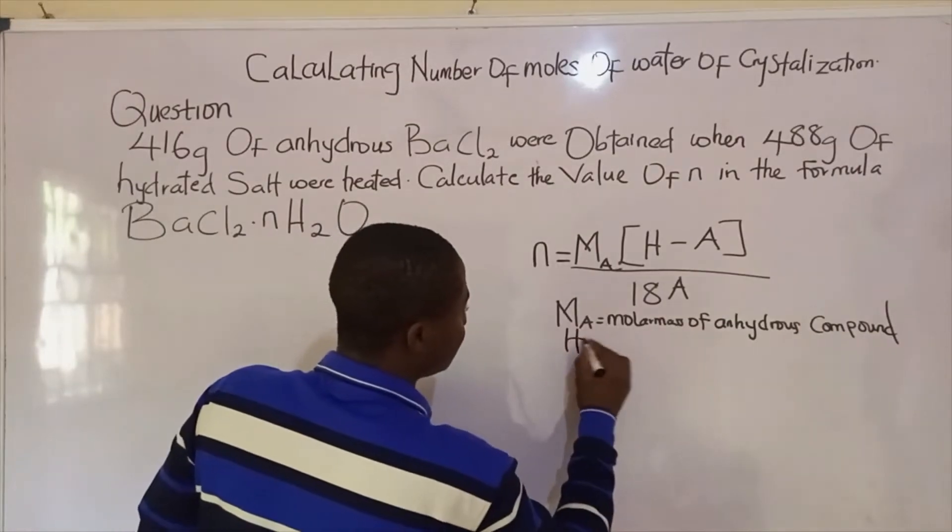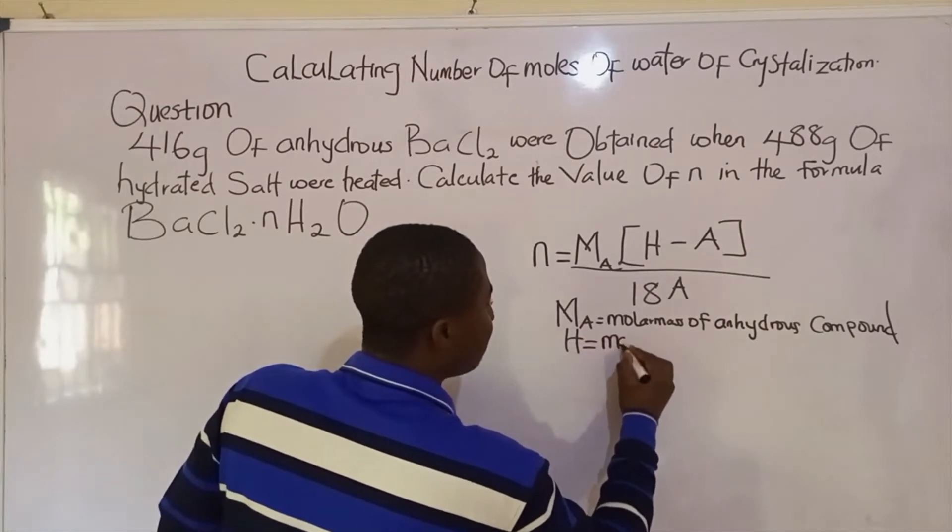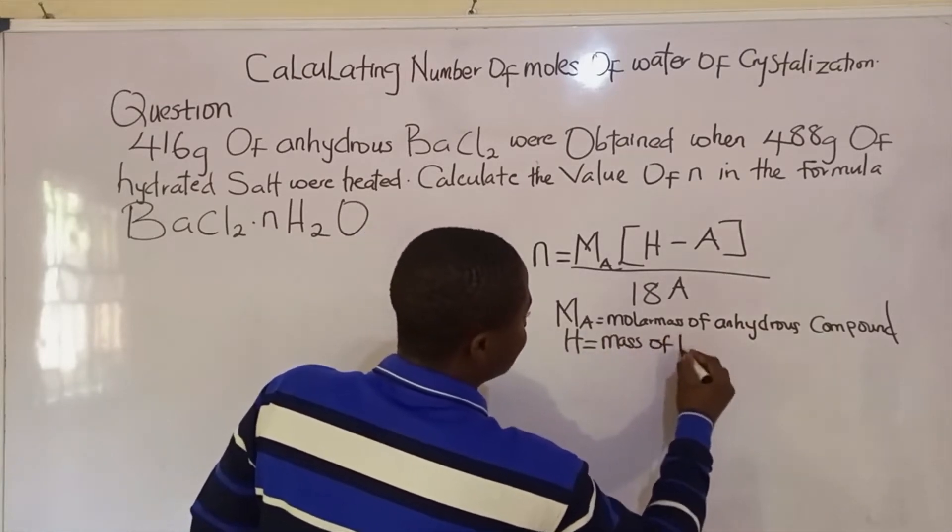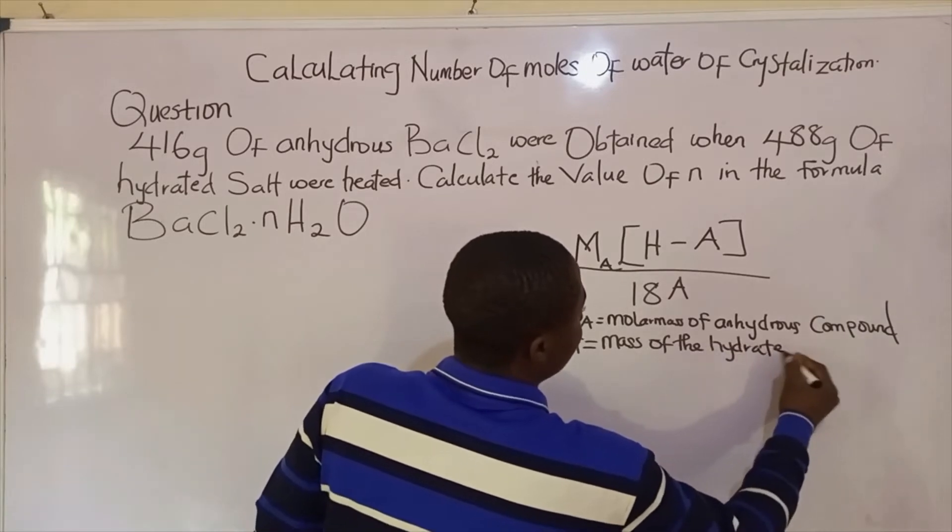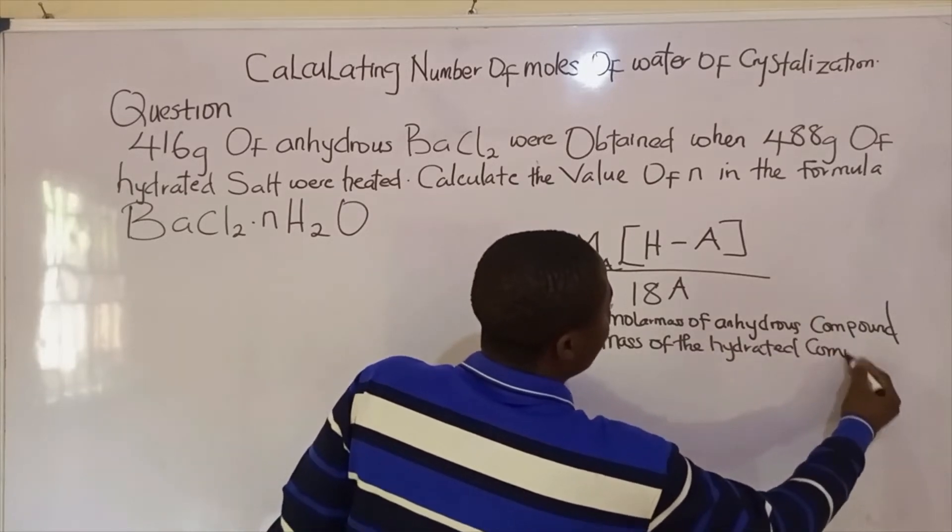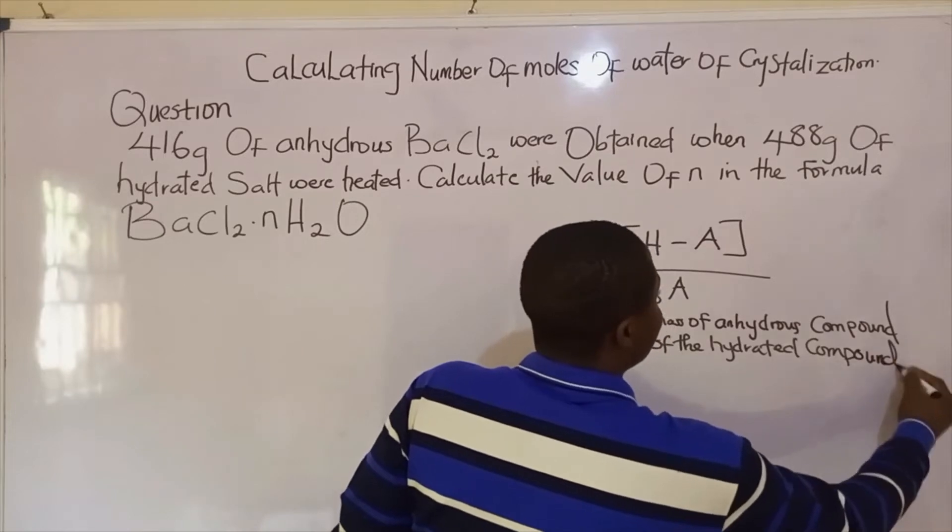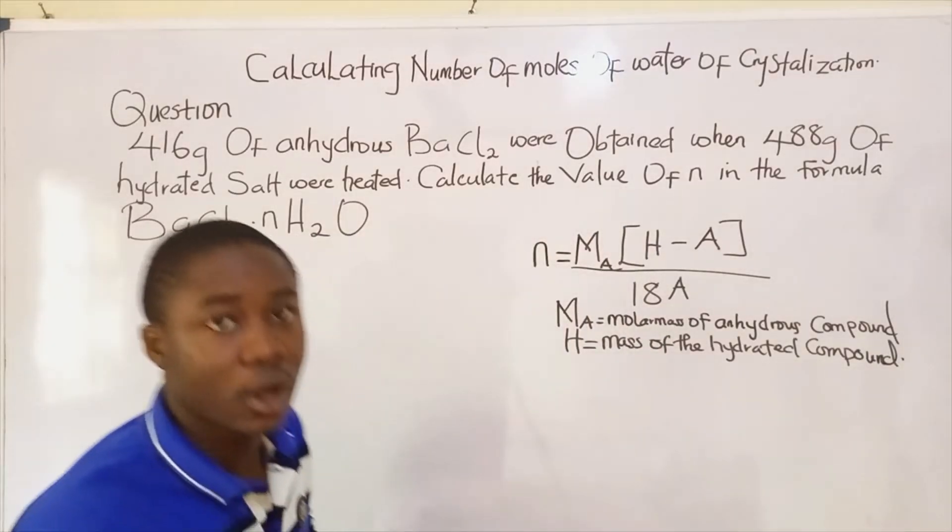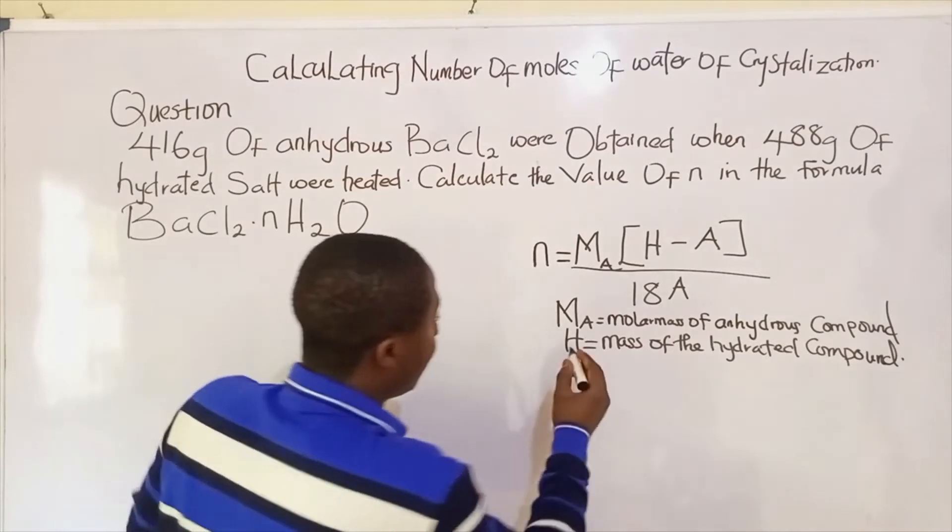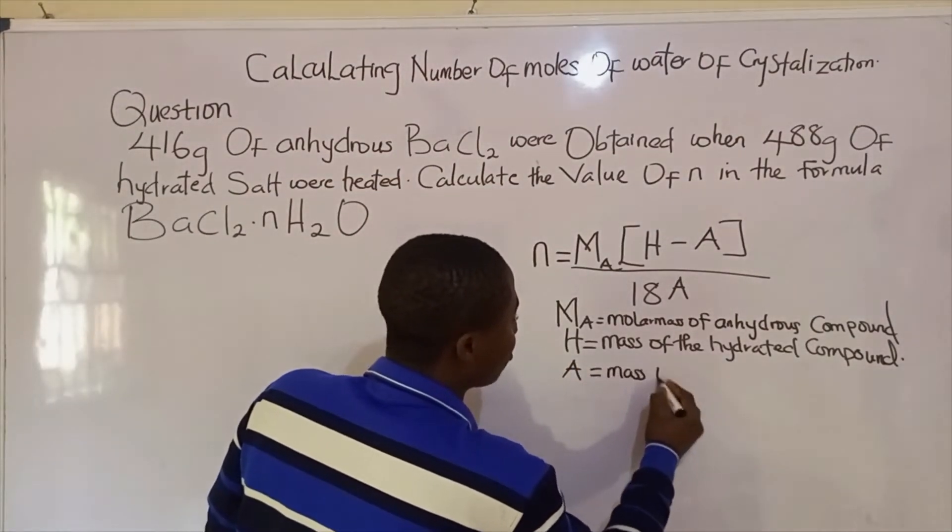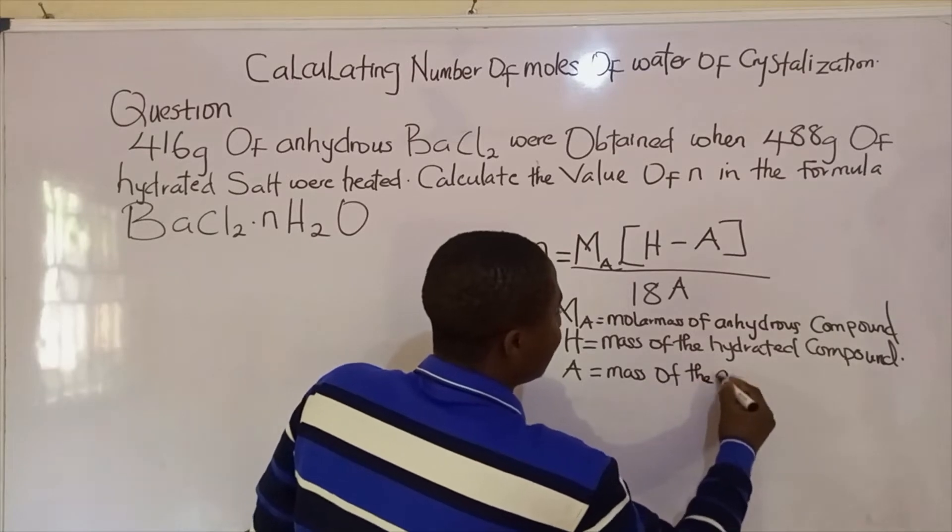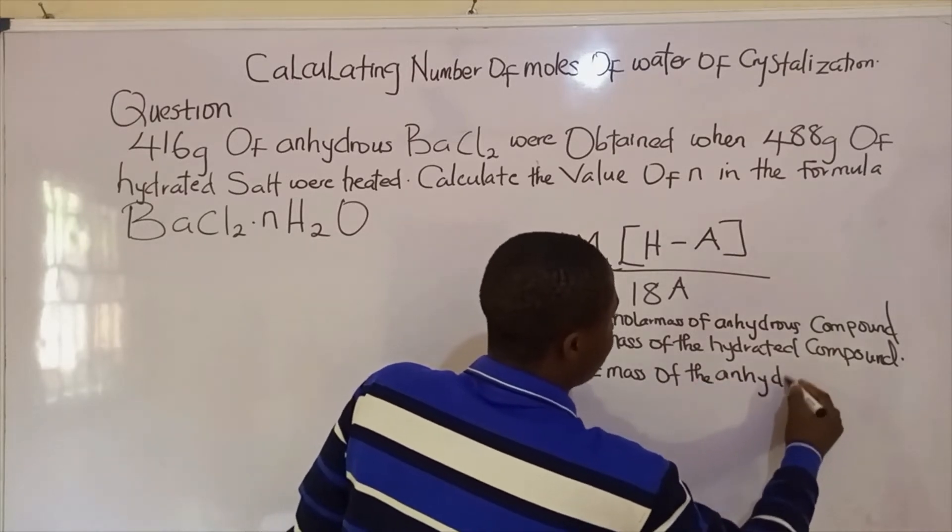What is H? It is simply mass of the hydrated compound. What does it mean for a compound to be hydrated? It means that compound contains water of crystallization. And now what is A? It is simply mass of the anhydrous compound.